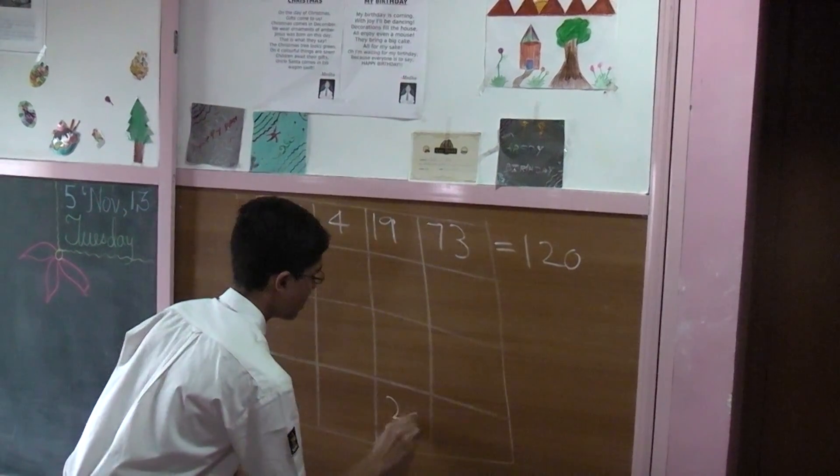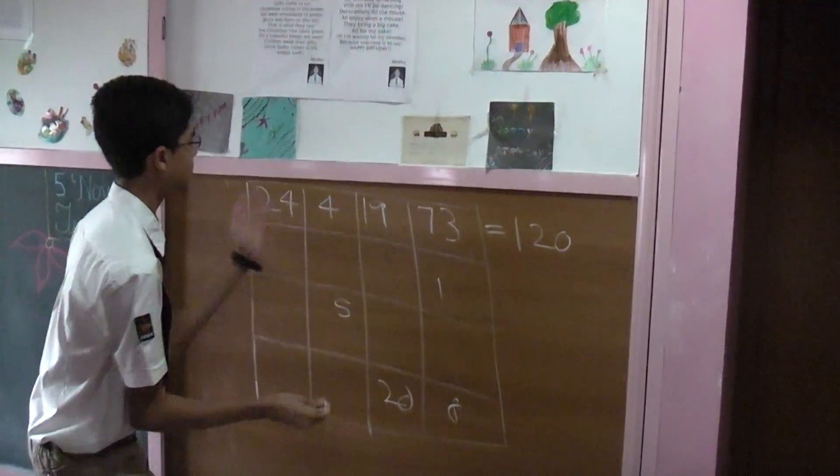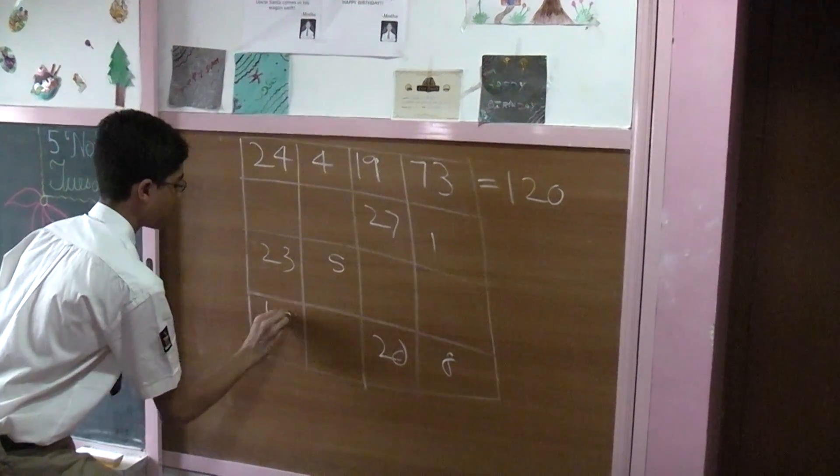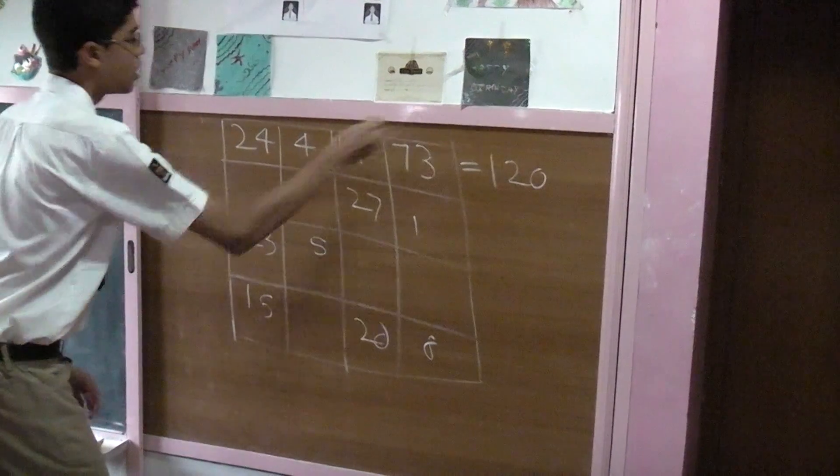We subtract 4 to get 20, we add 4 to get 8, and we put 5 here, we put 1 here, subtract 3, add it, we get 27, 4 add it, 4 subtract, we get 23, subtract 4 to get 15, 15 plus 23 is 38, 38 plus 24 is 62.